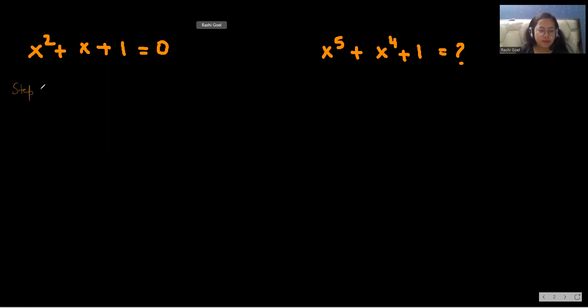In step 1 we'll take the first equation, x square plus x plus 1 equals 0. We divide the equation by x. So after dividing by x we get x plus 1 plus 1 over x equals 0. We can write it as x plus 1 equals minus 1 over x.